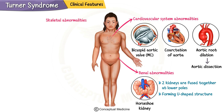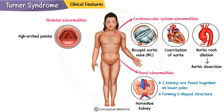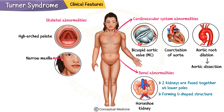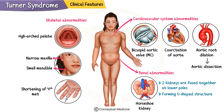Skeletal abnormalities are another important aspect of Turner syndrome. These include a high arched palate, a narrow maxilla, a small mandible, and shortening of the fourth metacarpal, which can be detected on physical examination or X-ray.